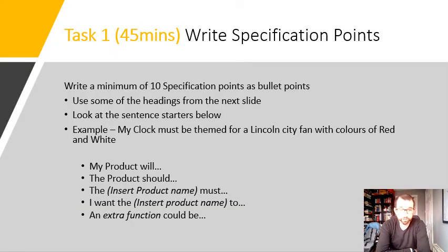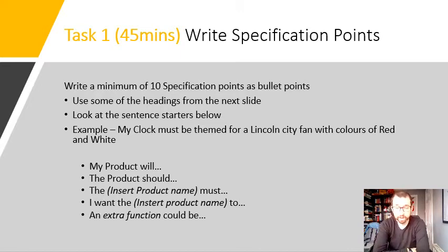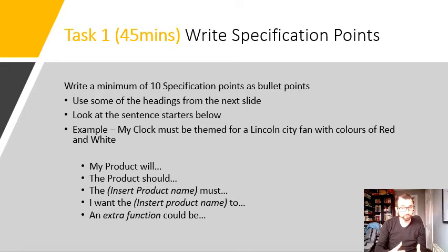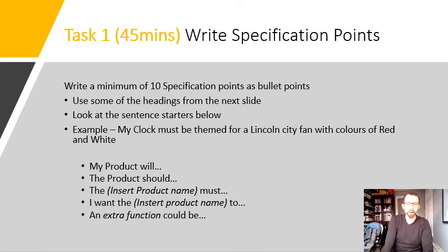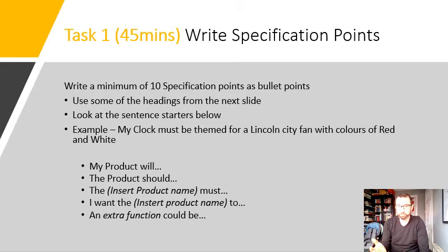In our first task, we're going to write a minimum of 10 different specification points. Getting to 15 will probably cover all the different areas in a bit more detail. We'll use the headings on the next slide to guide us, and we should use sentence starters like: my product will, my product should, my product must, or my product could. The most important points use the words must and will, less important ones use should, and even less important ones use could. For example: my clock must be themed for a Lincoln City fan with colours of red and white — can you spot the theme in this presentation?